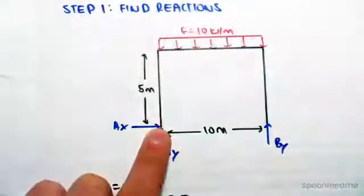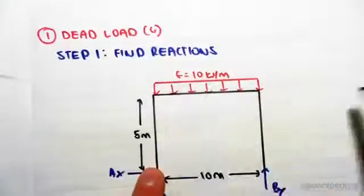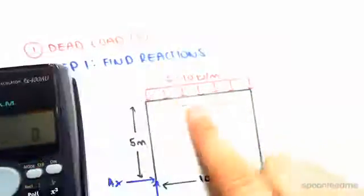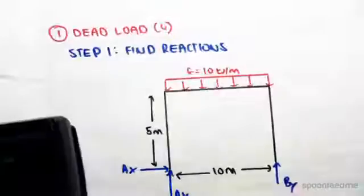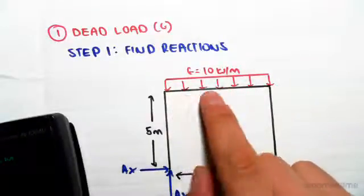The moment from this would be 10 by 10, so it's 10 kilonewton meters over 10 meters times by, so that's the force times by the distance of the lever arm. So that lever arm would be at the middle, so it would be times 5 meters.